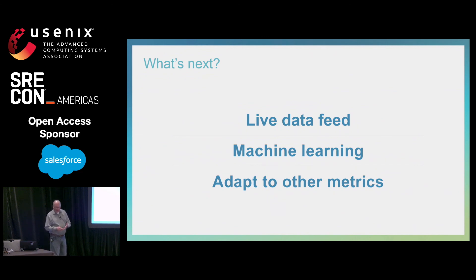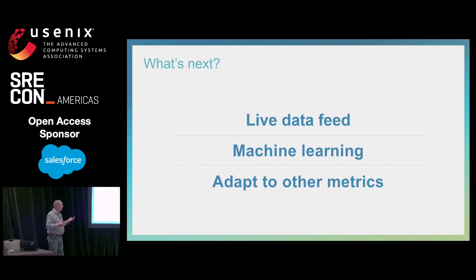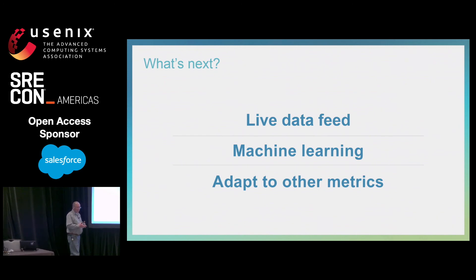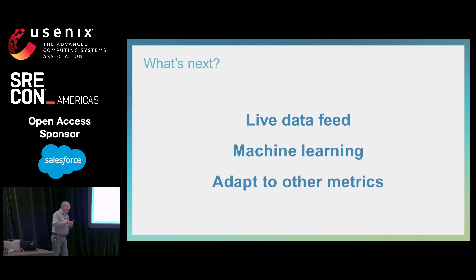What's next for us: right now the data we get from the third-party ITA, we have to go download manually — that's not ideal. What we want to set up is a live data feed and then pump that into machine learning so we have a constant answer and don't have to do this manually. We also want to adapt this type of analysis to other metrics, particularly with Windows IIS — how it queues and throws back 'server too busy' — we can model that the same way and properly size our on-prem services and web farms.